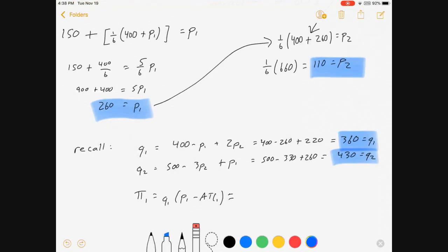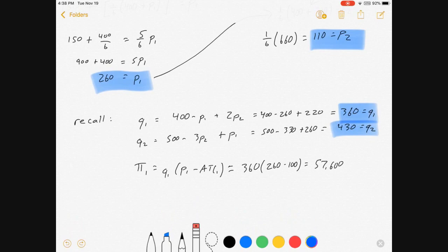And this is equal to 360 times 260 minus 100, which is $57,600. Profit for firm 2: Quantity 2 times P2 minus ATC2 is equal to 430 times 110 minus 100 equals $4,300. So even though firm 2 made a lot more units because their price was low, their price was low, so their profits are lower too.